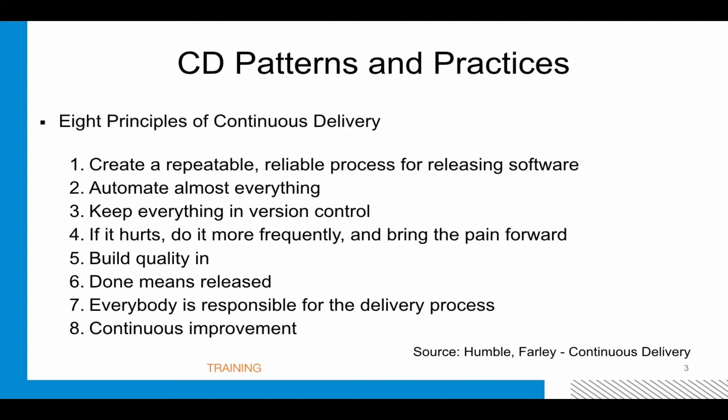Then there's Humble and Farley's eight principles of continuous delivery: create a repeatable, reliable process for releasing software; automate almost everything; keep everything in version control; if it hurts, do it more frequently and bring the pain forward; build in quality — this is a big Deming thing, referencing Dr. Edward Deming, the famous management consultant. Done means released, and everybody is responsible for the delivery process.